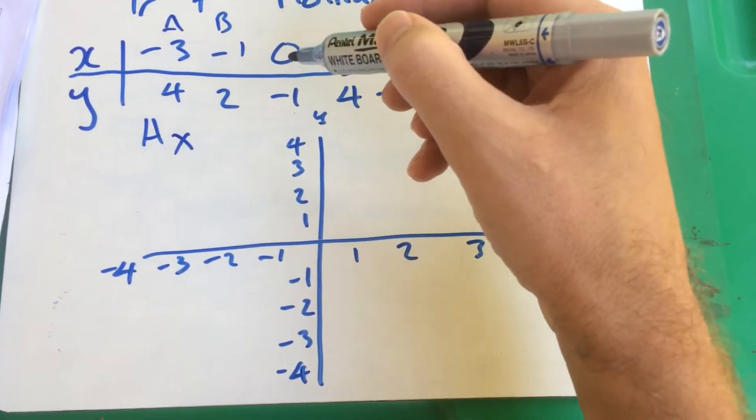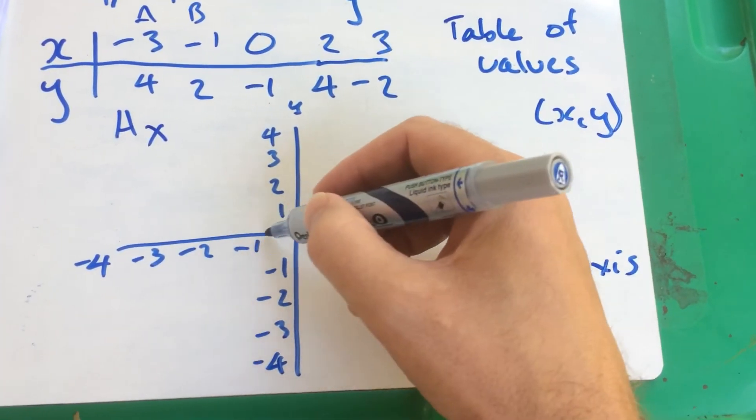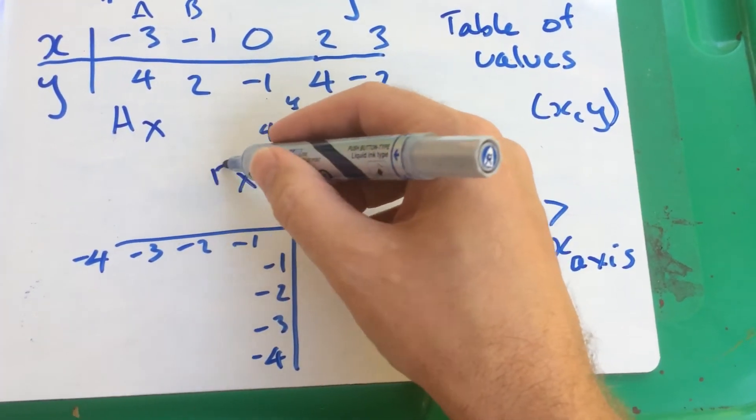The next one is minus 1, 2. So go to minus 1 and then 2, and call that B.